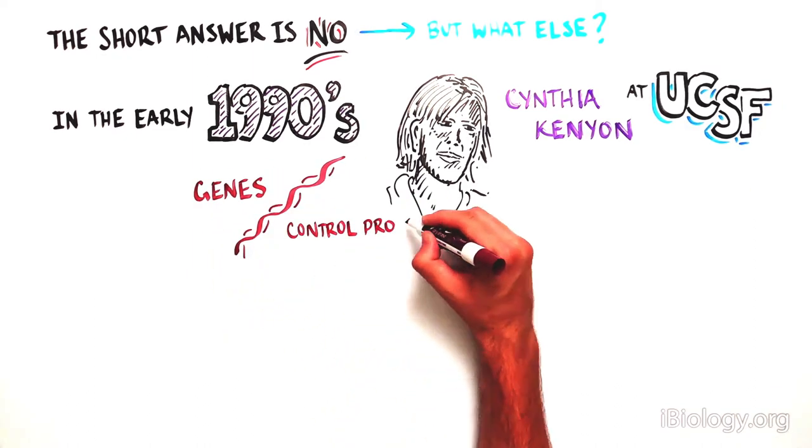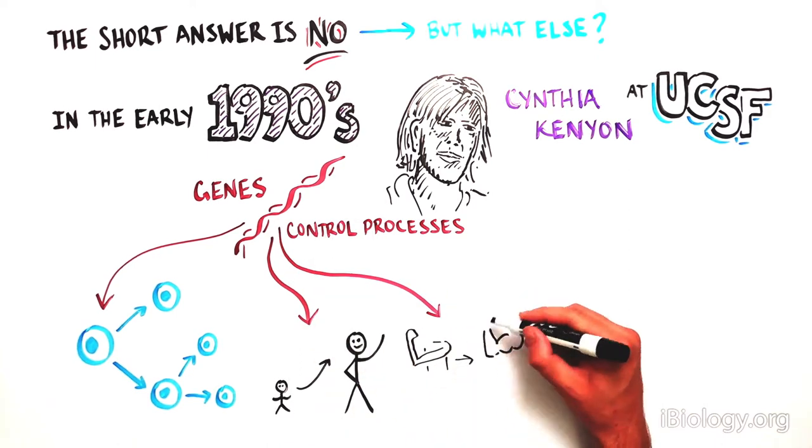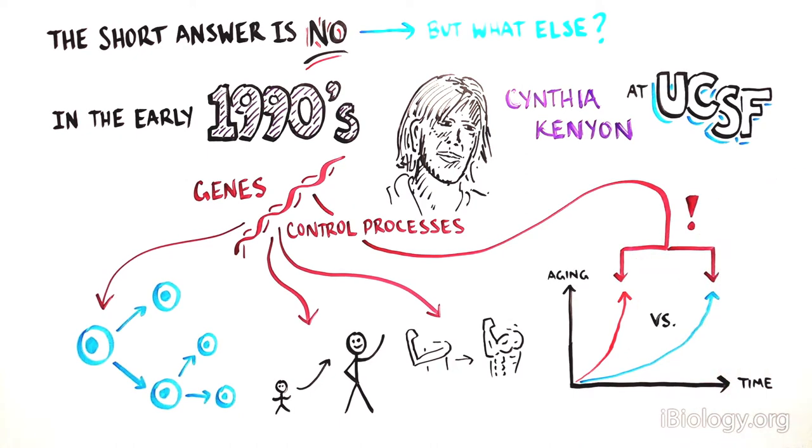Being a geneticist, she knew that most processes were controlled by genes. So she thought these differences in the rate at which we age might also be genetically controlled.